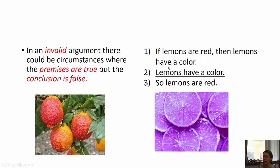This is again the fallacy of affirming the consequent: if A then B, B therefore A. Modus ponens should be if A then B, A therefore B. Here the antecedent and consequent are switched, and this is invalid.